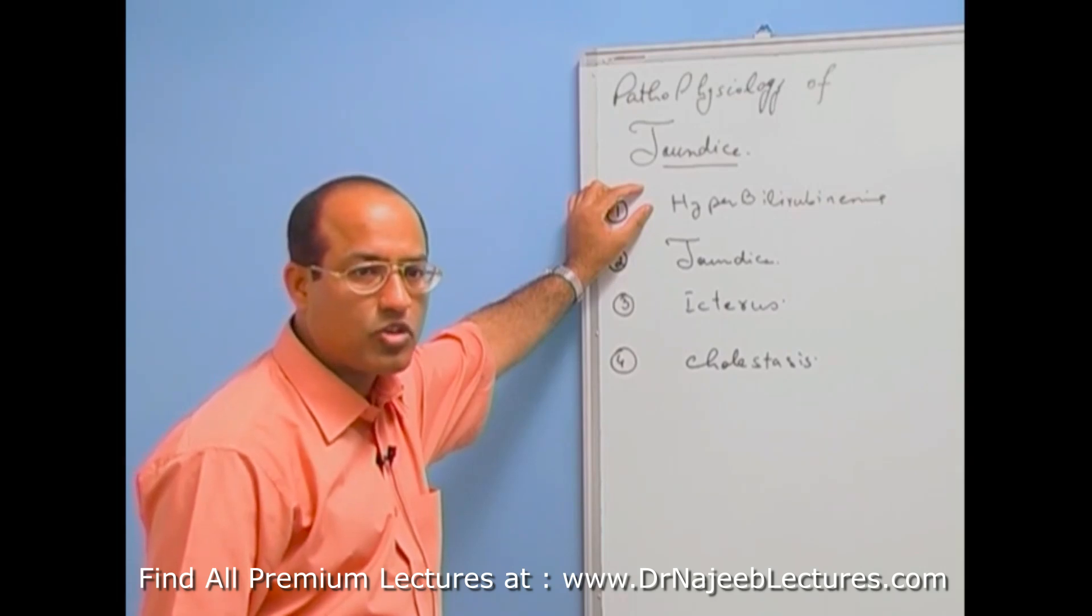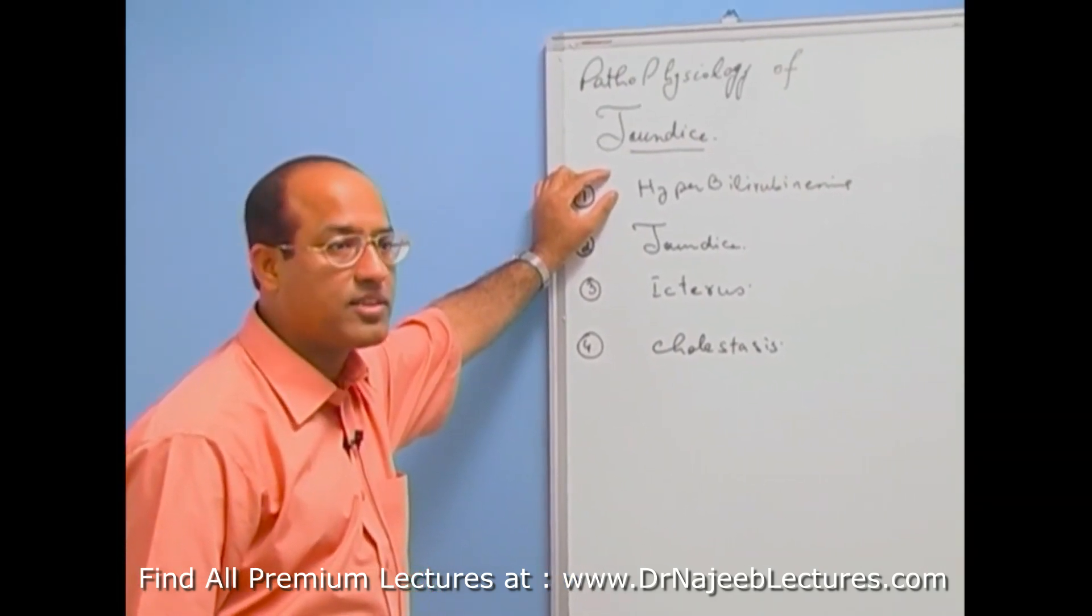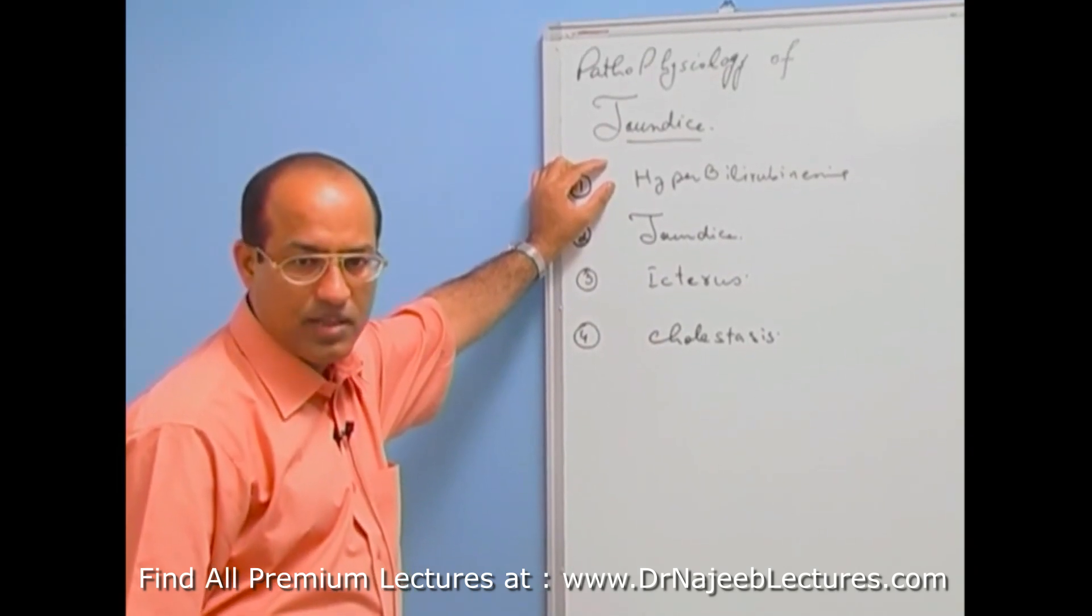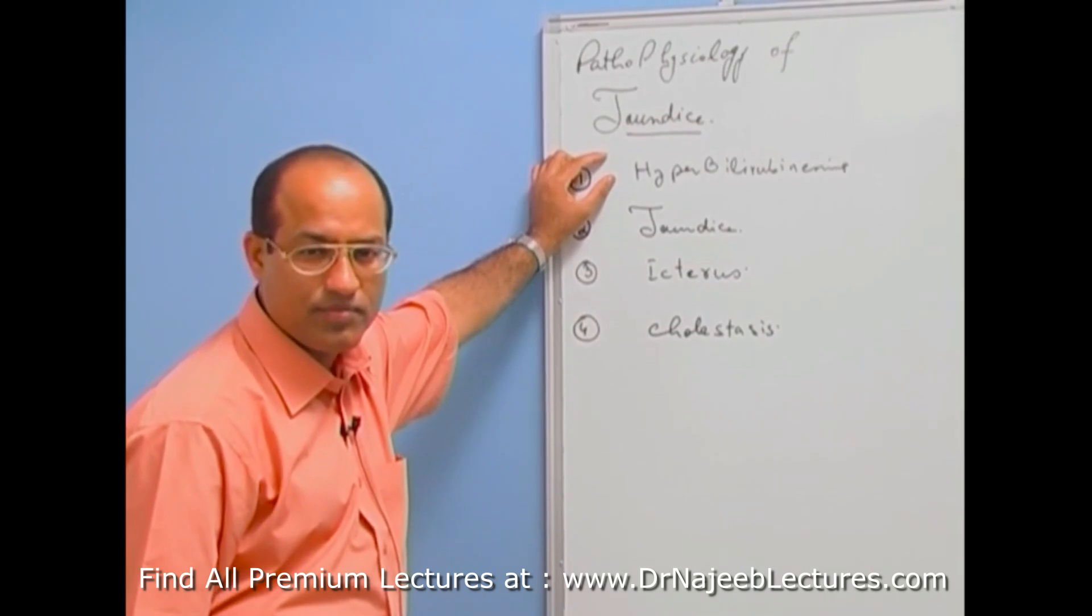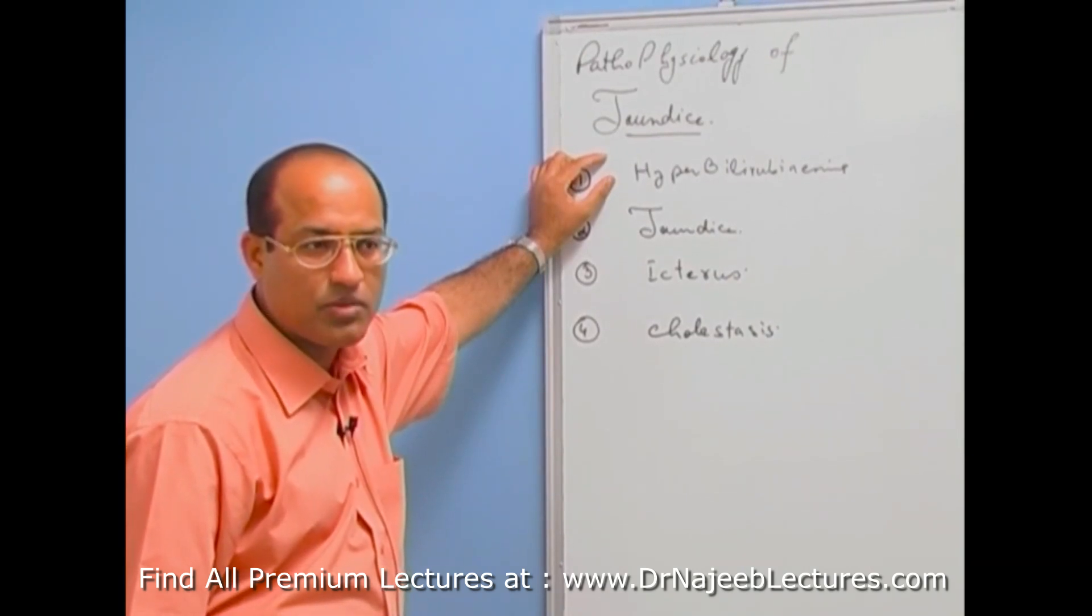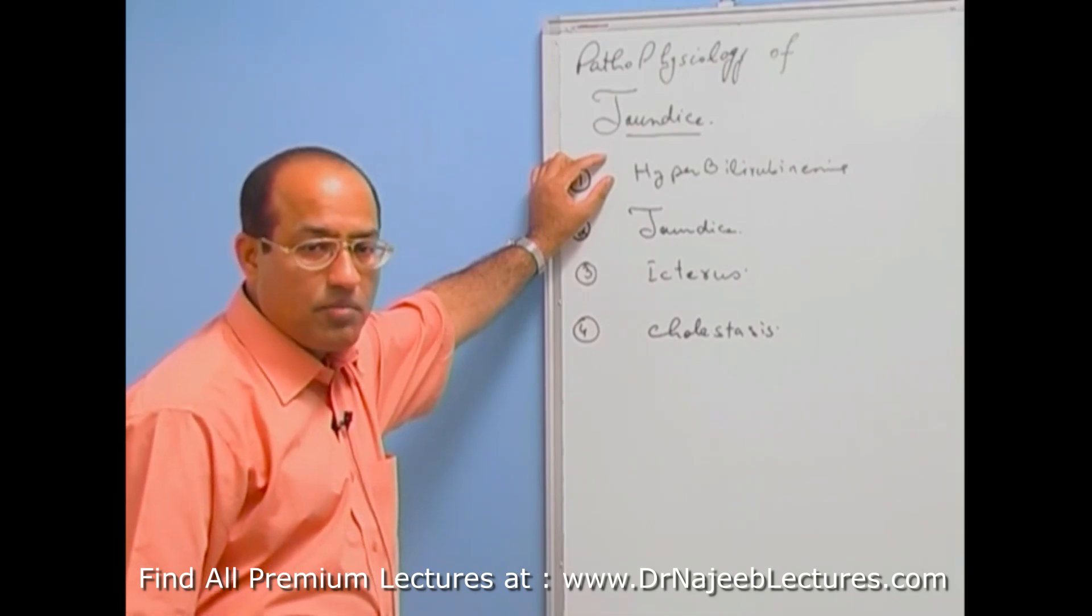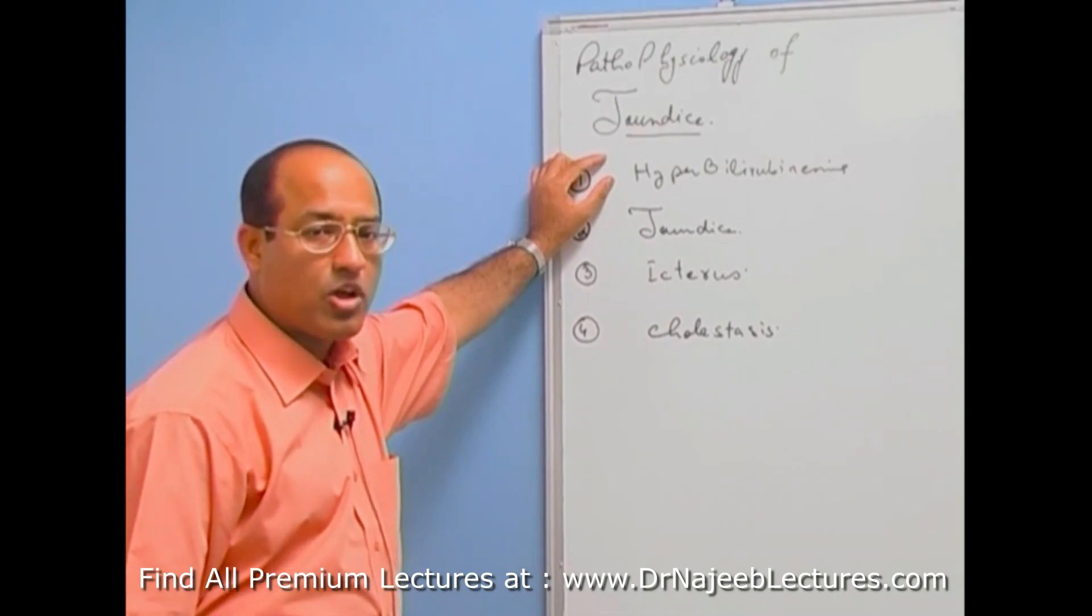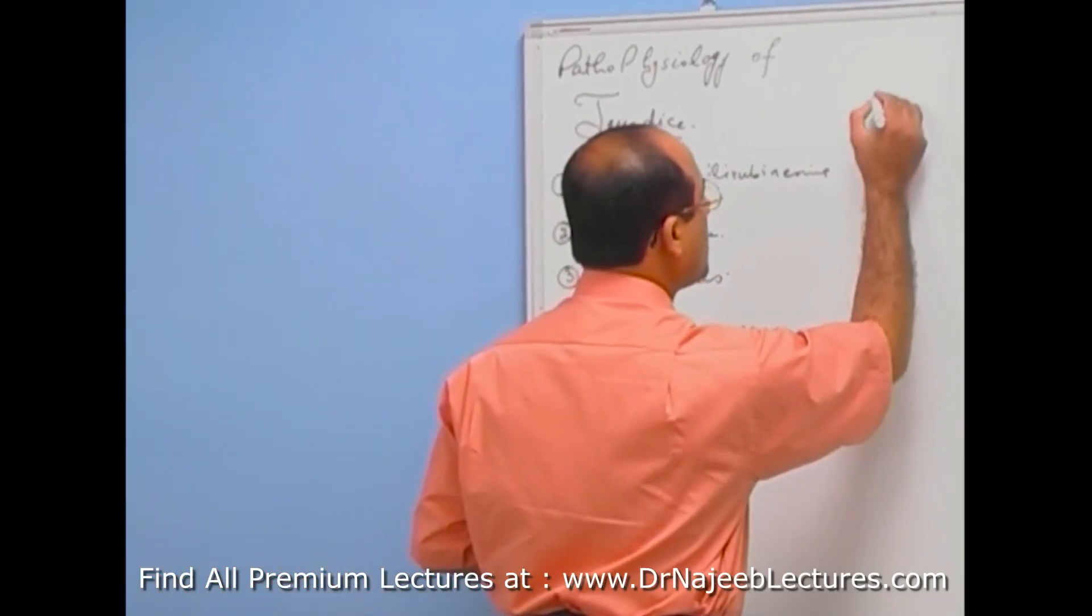these toxic molecules, because they are daily produced about 0.2 to 0.3 grams per day, this bilirubin should be pushed out of the body. Body should have very efficient mechanism to get rid of bilirubin. But if bilirubin levels go above normal in the body, first of all you should know what is the normal level of bilirubin. What is the normal level of bilirubin?